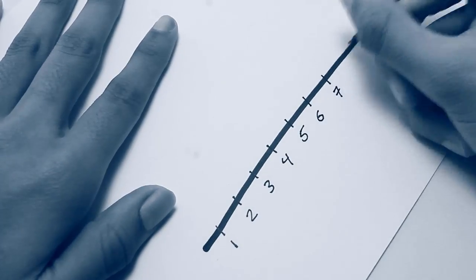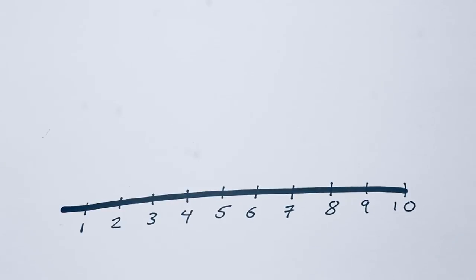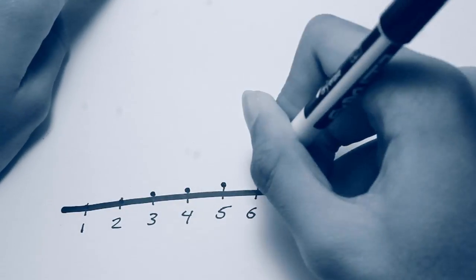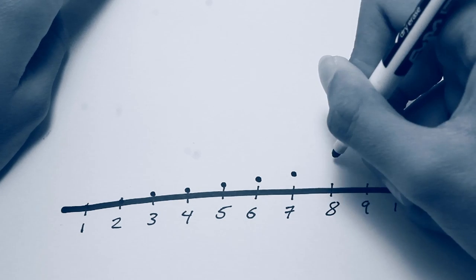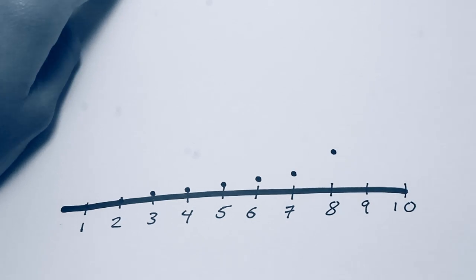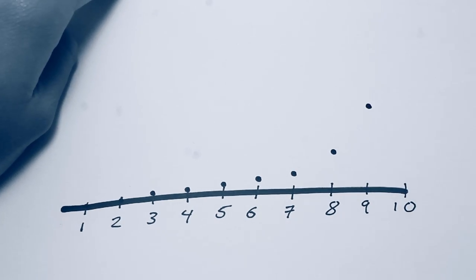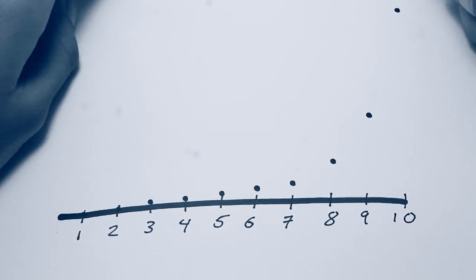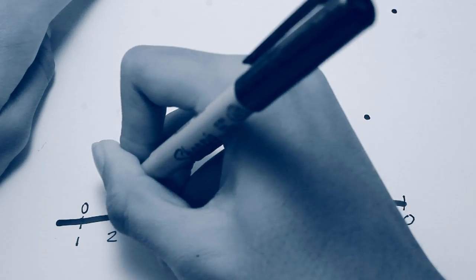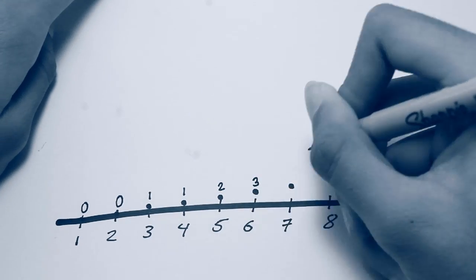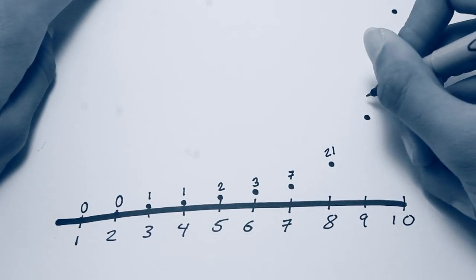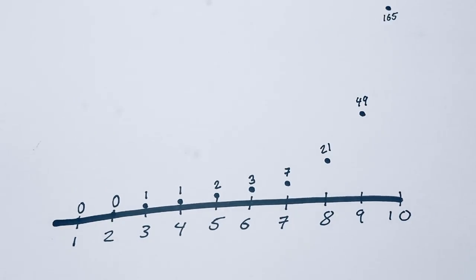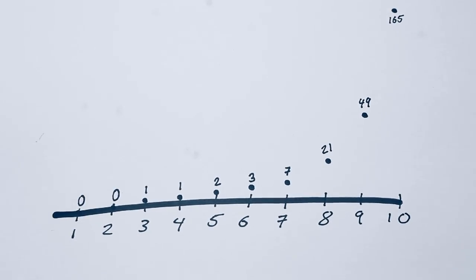Increasing crossing numbers increases the number of knots very quickly — they almost increase exponentially. You go from 0 to 165 knots all the way in just 10 steps. That goes really quickly.